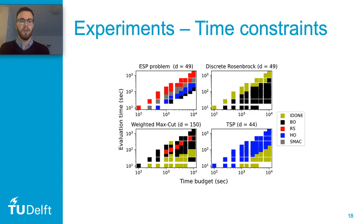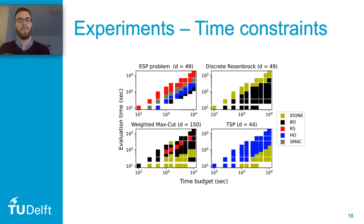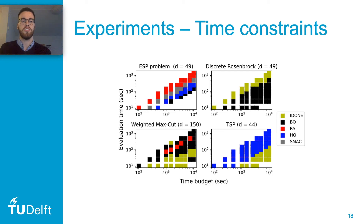I'd also like to mention another experiment where we took computation time into consideration. Although not shown earlier, Bayesian optimization has a much larger computation time compared to the other algorithms, so it seems relevant to restrict the time budget instead of just the number of evaluations. We varied the evaluation time of the objective function and gave each algorithm a given time budget — each square in this figure shows the best performing algorithm given a certain time budget and evaluation time. The results are more mixed, but continuous surrogates still perform well under certain constraints even when computation time is considered.